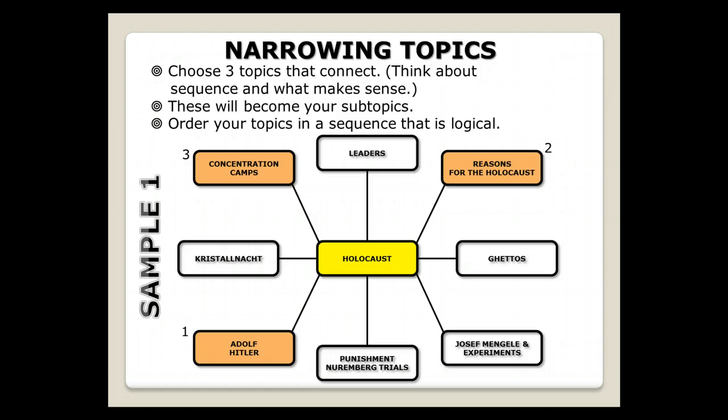So when I'm looking at my research packet that looks like this, those areas of focus I can plug into my research packet. And so you can see for this one, this example, I took for the Holocaust, I might be interested in finding information about Adolf Hitler, about the reasons for the Holocaust being my second area of topics, and then concentration camps. And so I could put those in order based on a sequence that is logical.